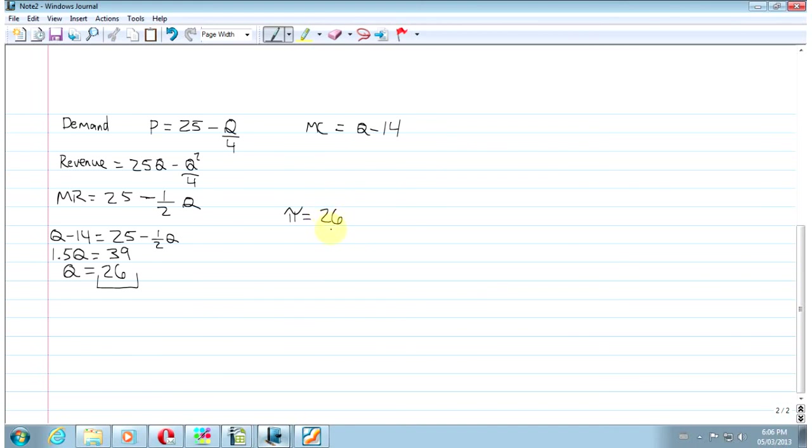So we know that his optimal quantity based on his marginal cost is 26. So that's quantity. Now let's multiply by price. So price is 25 minus 26 over 4. So his price is 18.50.